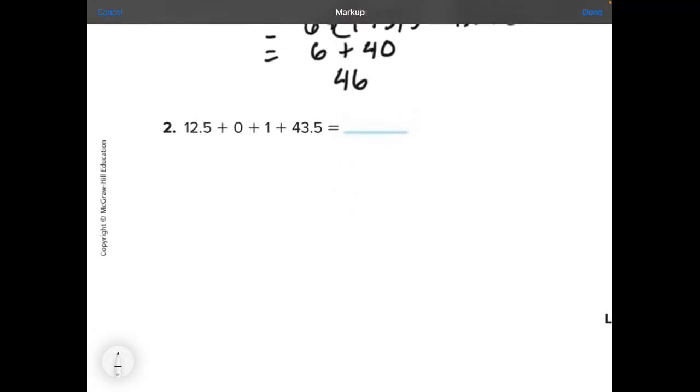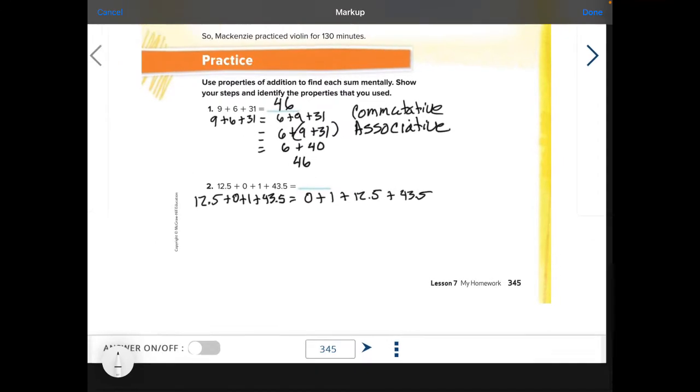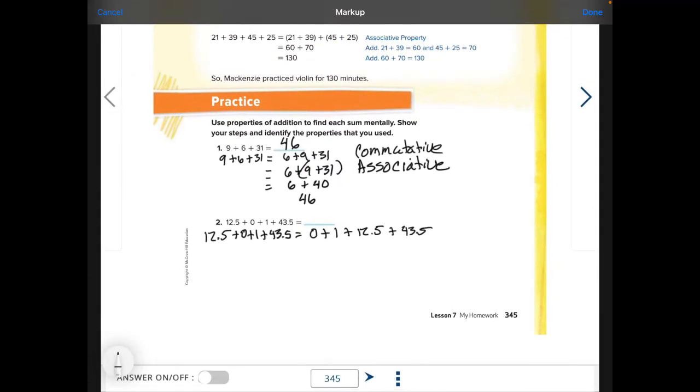Number 2, we're going to write this out again. We're going to have 12.5 plus 0 plus 1 plus 43.5. Now we can rearrange this so maybe it's in order from least to greatest. So 0 is the least and then 1 is the next littlest number, then we have 12.5 and then our last one is 43.5. Make sure you use all your numbers up. So when we order them, change the order, but it still has the same numbers. We're going to call it the commutative.